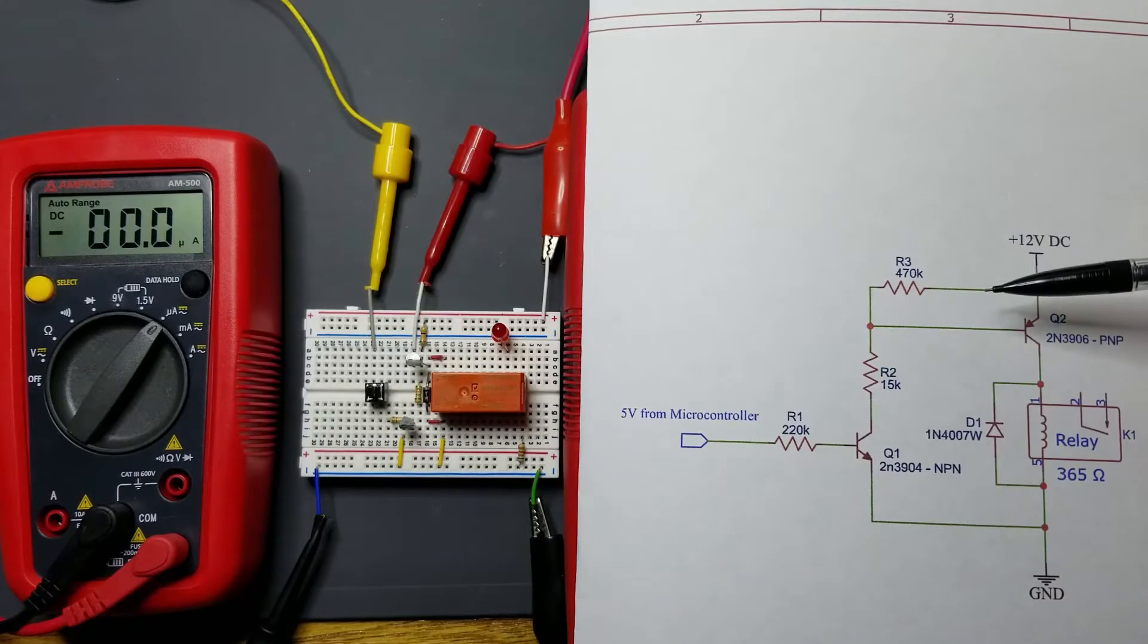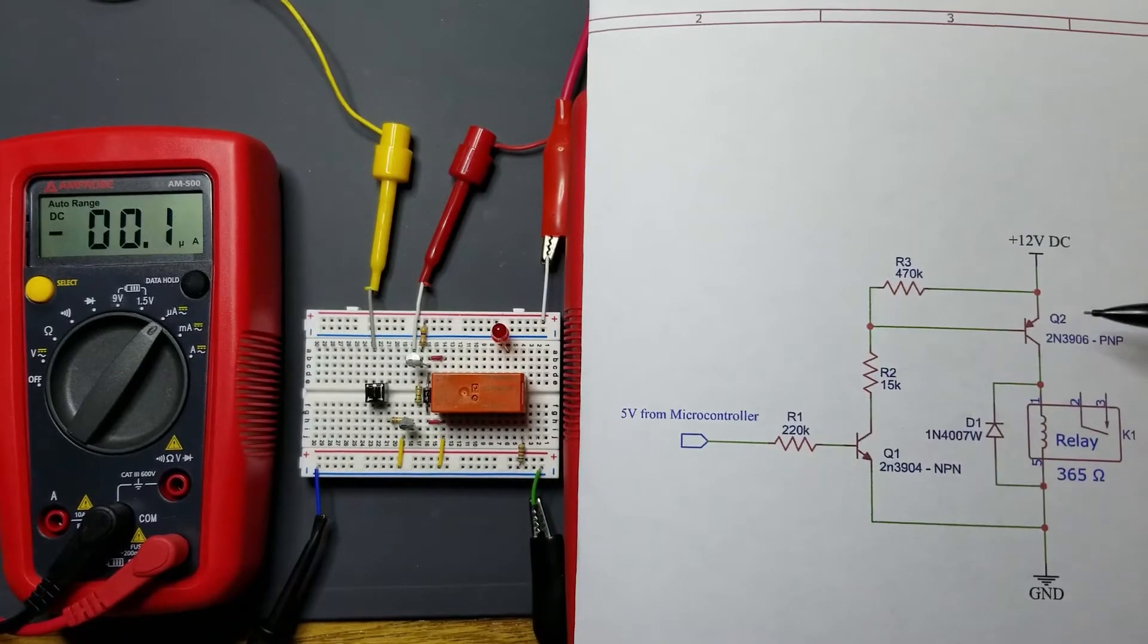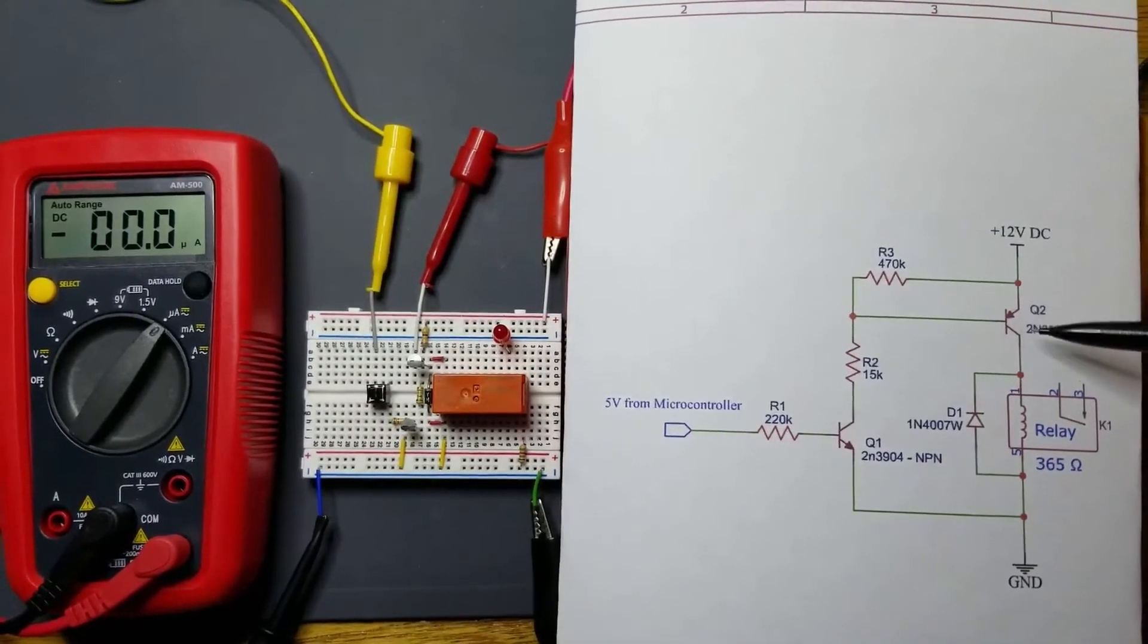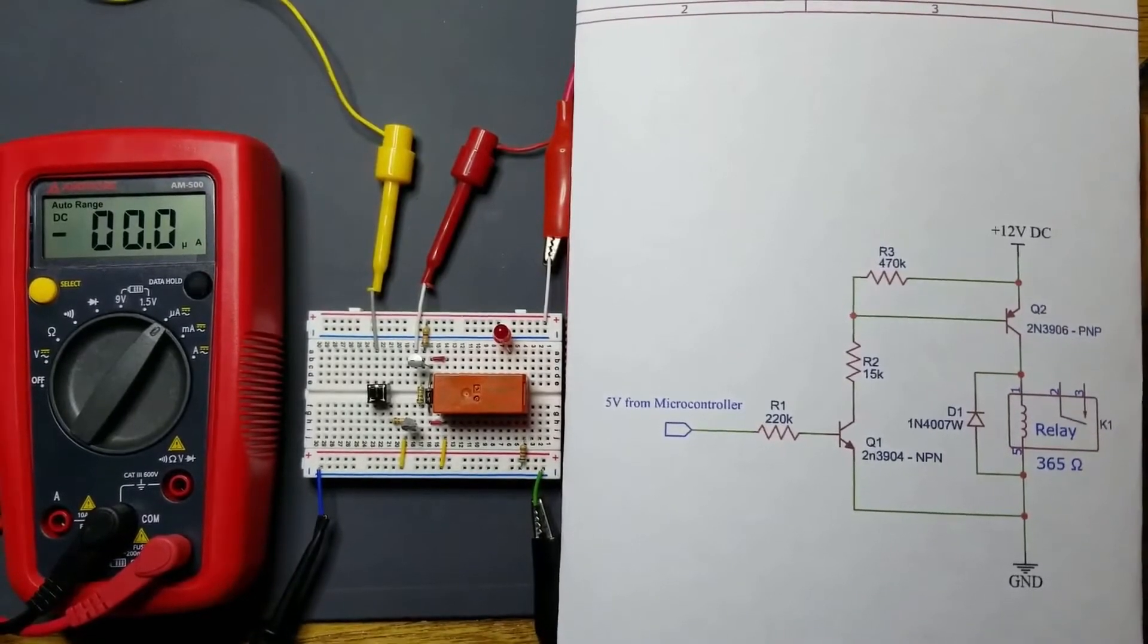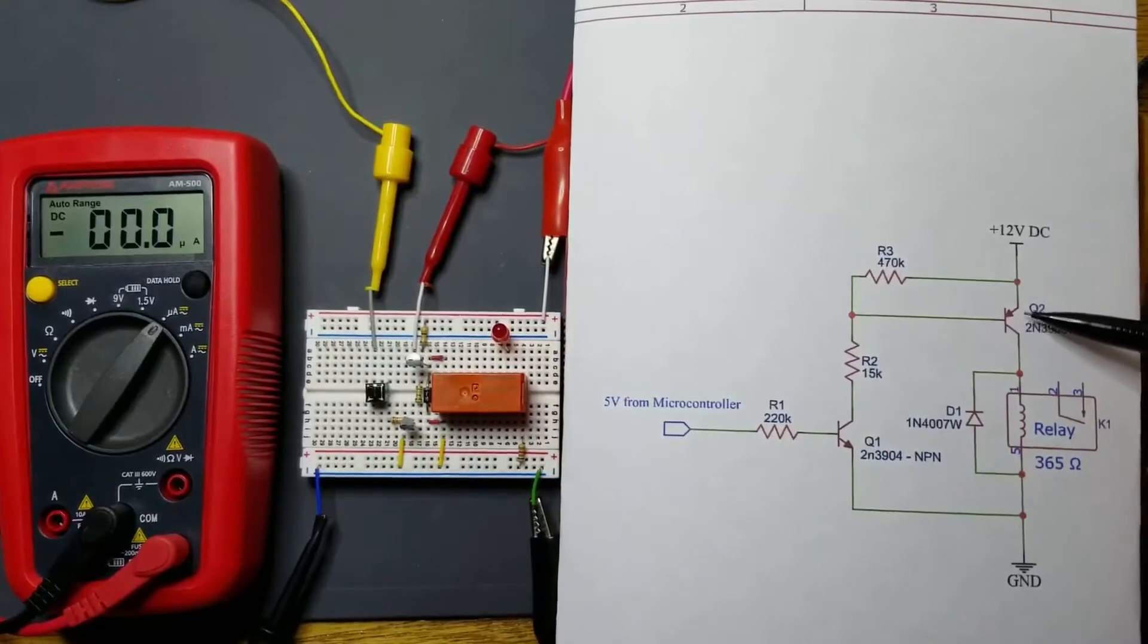This side of this resistor pulls the base of this transistor down. Normally it's going to be high because of this resistor here. The reason we have that resistor there is to keep it in a defined state until we're ready to pull it down. When this transistor pulls the base down, it puts this transistor into saturation. In doing that, it turns this transistor on and energizes this relay by the current going through the collector. This has 12 volts across it, and this has just about zero volts.